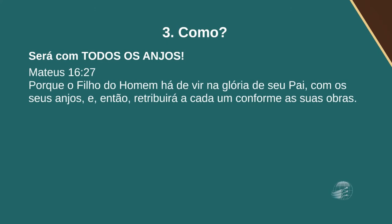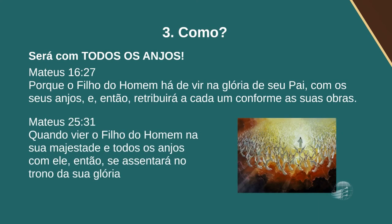Mateus 16, versículo 27: Porque o Filho do Homem há de vir na glória de seu Pai com os seus anjos, e então retribuirá a cada um conforme as suas obras. E em Mateus 25:31: Quando vier o Filho do Homem na sua majestade, e todos os anjos com ele, então se assentará no trono da sua glória. Como se dará a segunda vinda? Será um evento com todos os anjos. Será um evento visível.